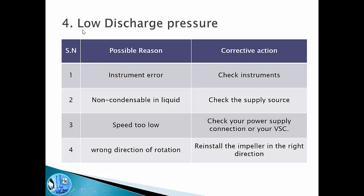The fourth problem is low discharge pressure. The reason could be an instrument error giving misleading readings — we need to check and calibrate our pressure gauges. It could be non-condensables in the liquid, and as mentioned we need to check the supply source, since a mix of gas with liquid will affect pump performance. Maybe the pump is running at very low speed — we need to check the power supply connections or the variable speed controller if one is attached. There could also be a wrong direction of rotation, in which case we need to reinstall the impeller in the correct direction.